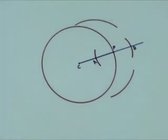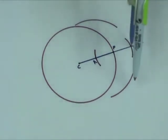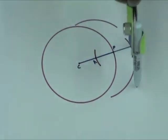Without changing the compass width, place the compass point on B and draw arcs that intersect the previous arcs.